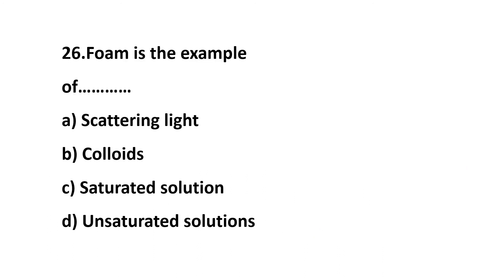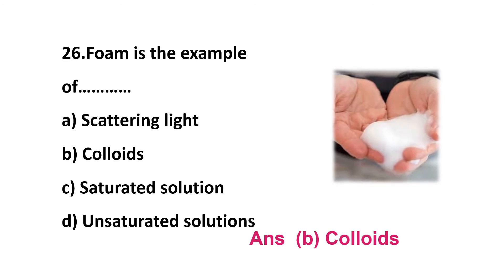Question 26: foam is an example of — option A: scattering of light, option B: colloids, option C: saturated solution, option D: unsaturated solution. The correct answer is option B: colloids. Foam is an example of colloids because the substance does not dissolve properly in water molecules, so it produces a foam substance.